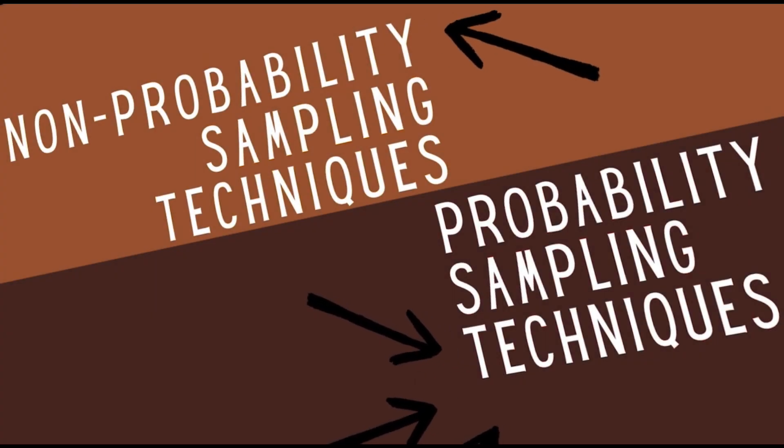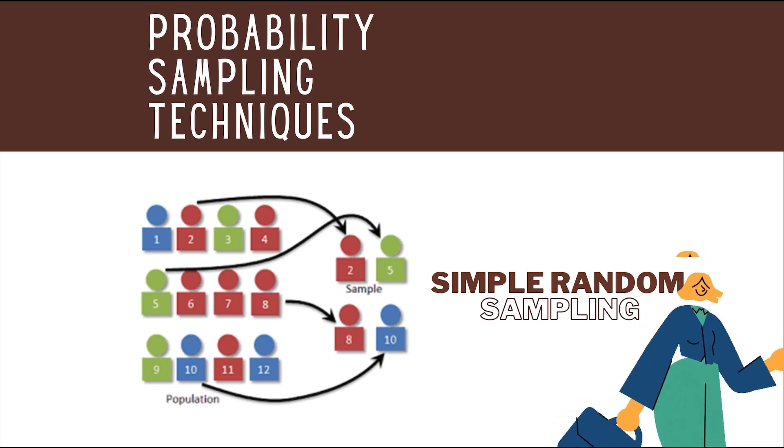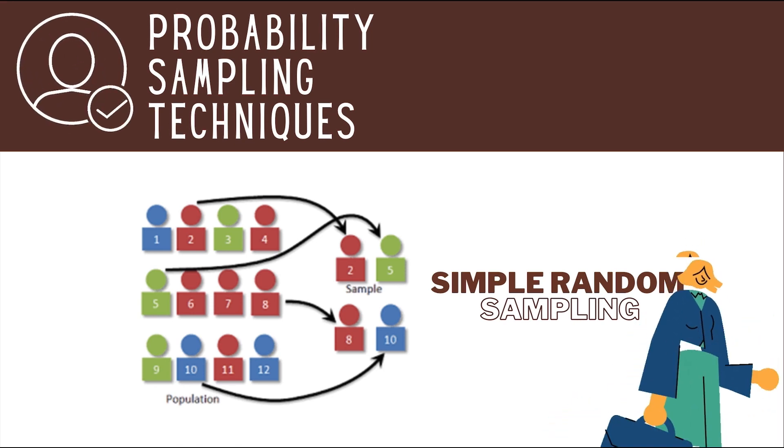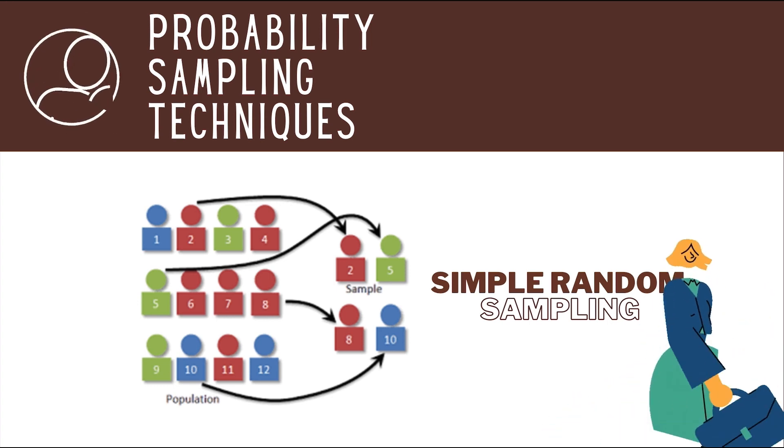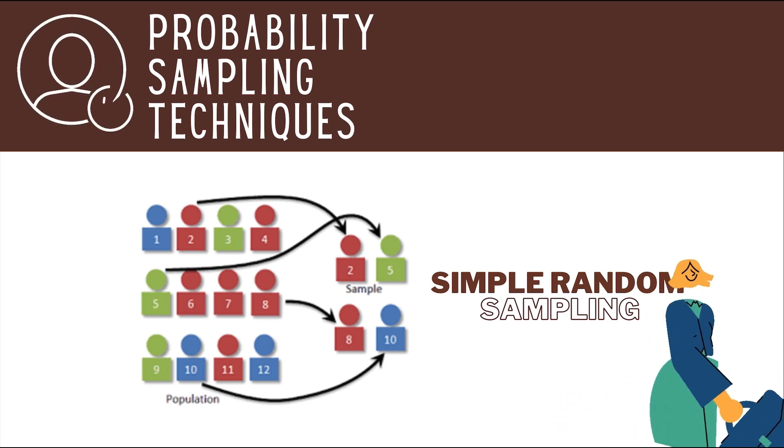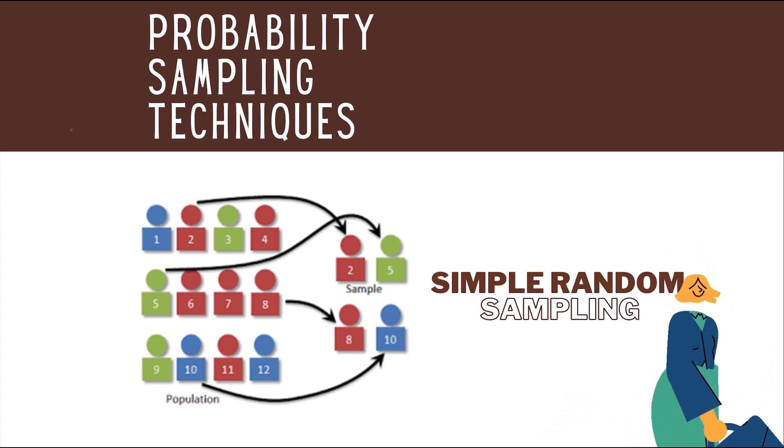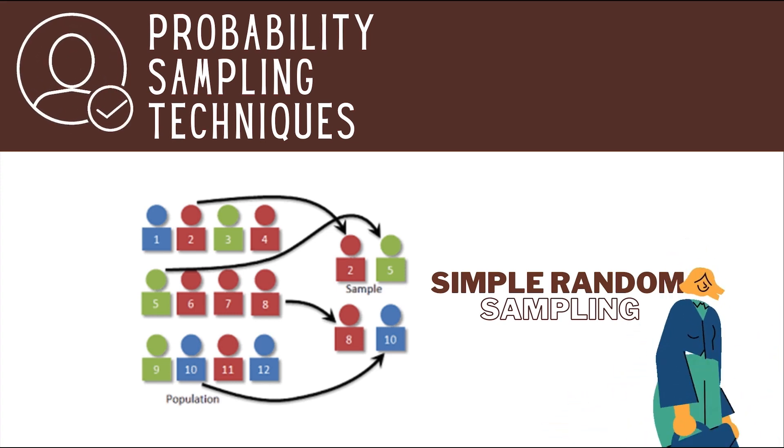Let's go now with the sampling technique that employs random selection or the probability sampling technique. This process assures that it gives equal chance to all individuals in the population.